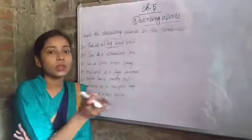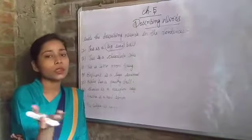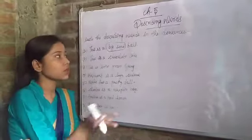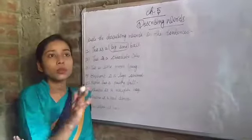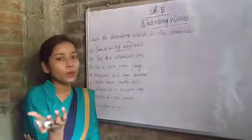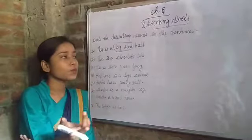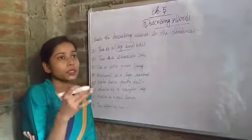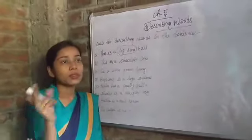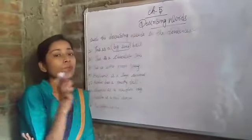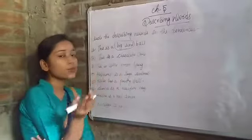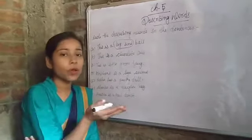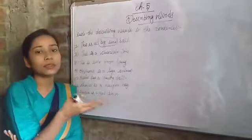The definition: a word that tells us more about a naming word is called a describing word. This is a ball — ball is a simple common noun or naming word. But this is a big red ball. Now we know that the ball is big and red. So here we have two words describing the ball — big and red are the describing words for ball, and ball is the naming word.